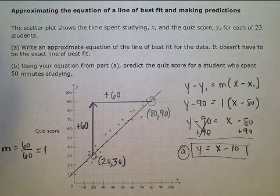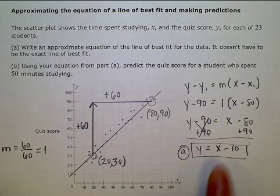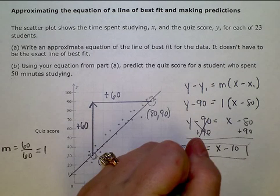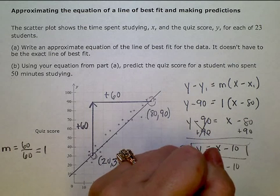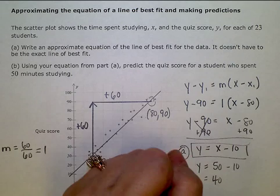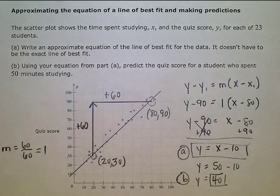For part B, it says to use your equation to make a projection for a student who spent 50 minutes studying. So I'm going to substitute 50 in there for x. So y equals 50 minus 10, or y would equal 40.